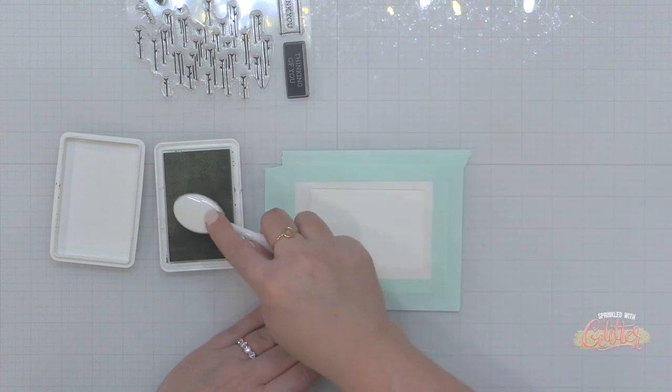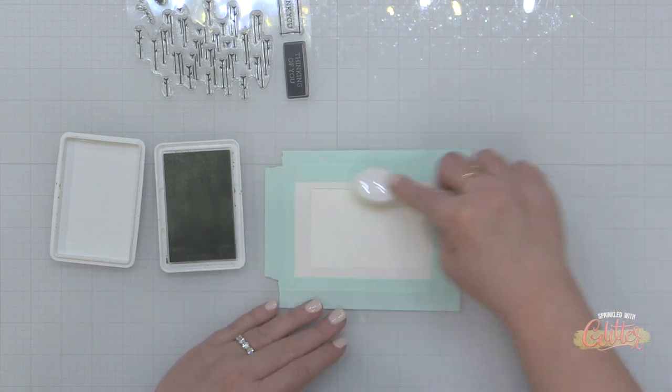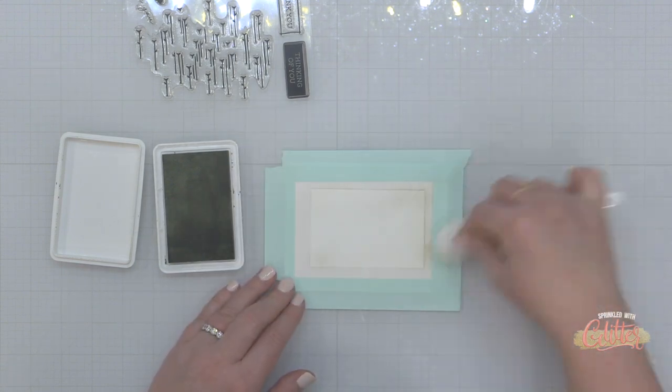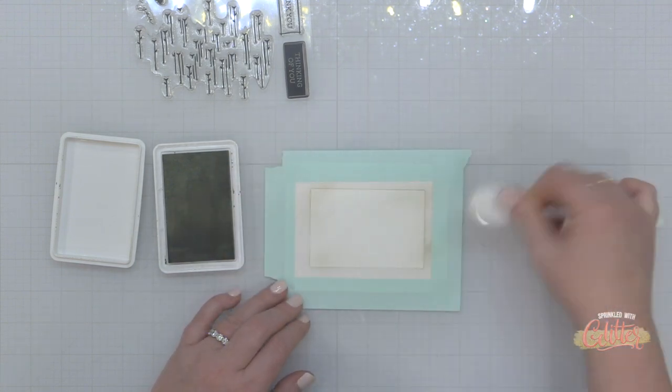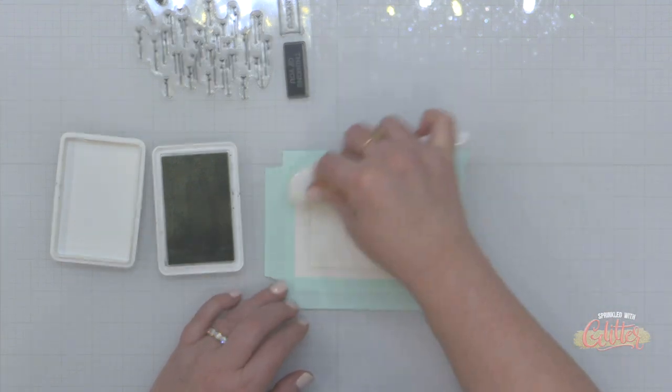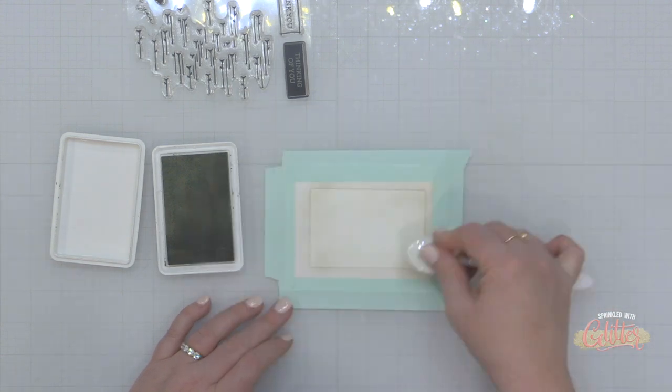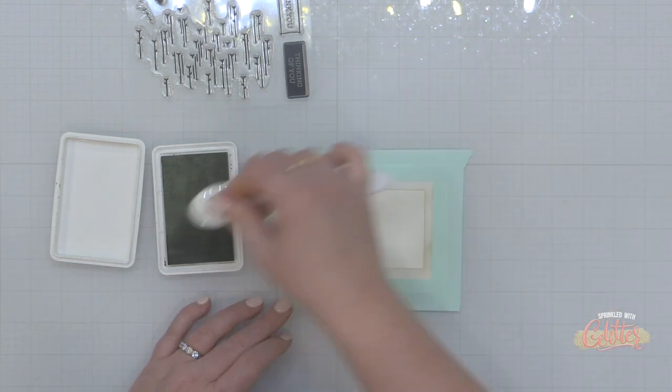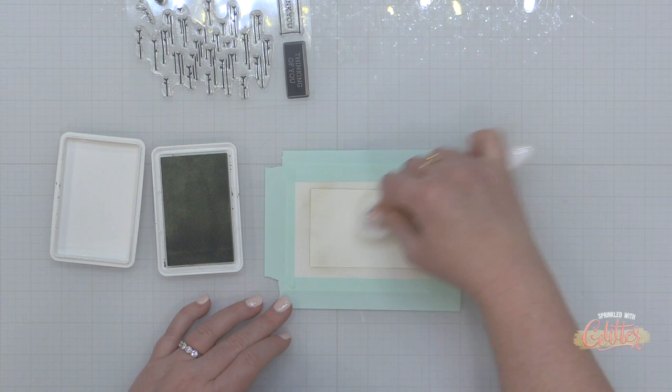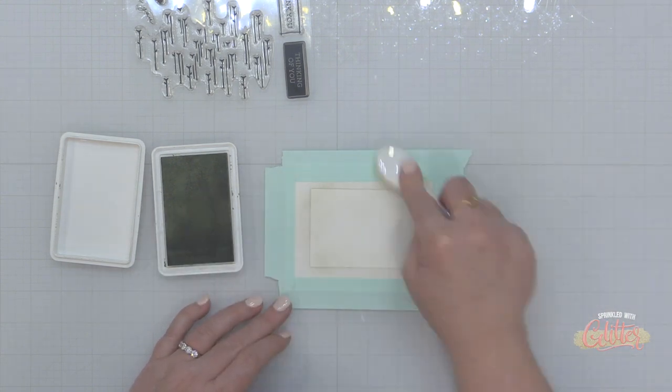Now I'm going to take some Concord and 9th pebble ink and I'm gently going to blend some color into this rectangle. Now in the pictures at the end, you cannot see this super bright or dark rectangle. And I really wanted it to be soft and subtle. And I'm keeping my blending soft and subtle. But keep in mind that in real life, you can really see this.